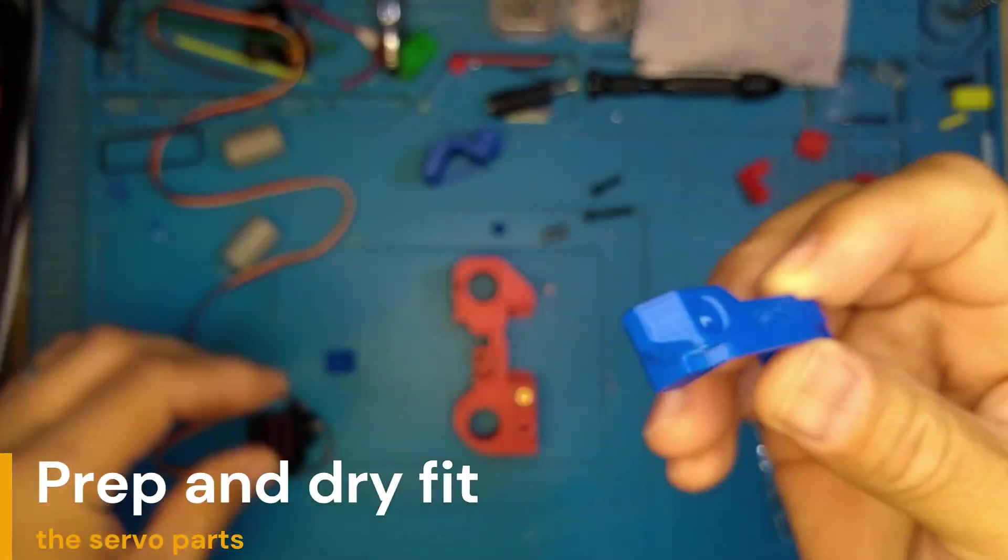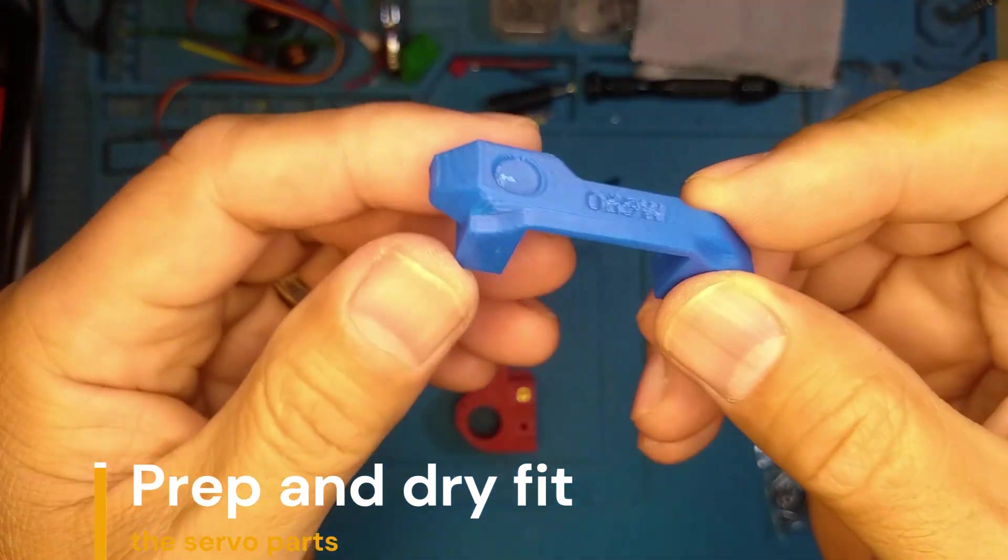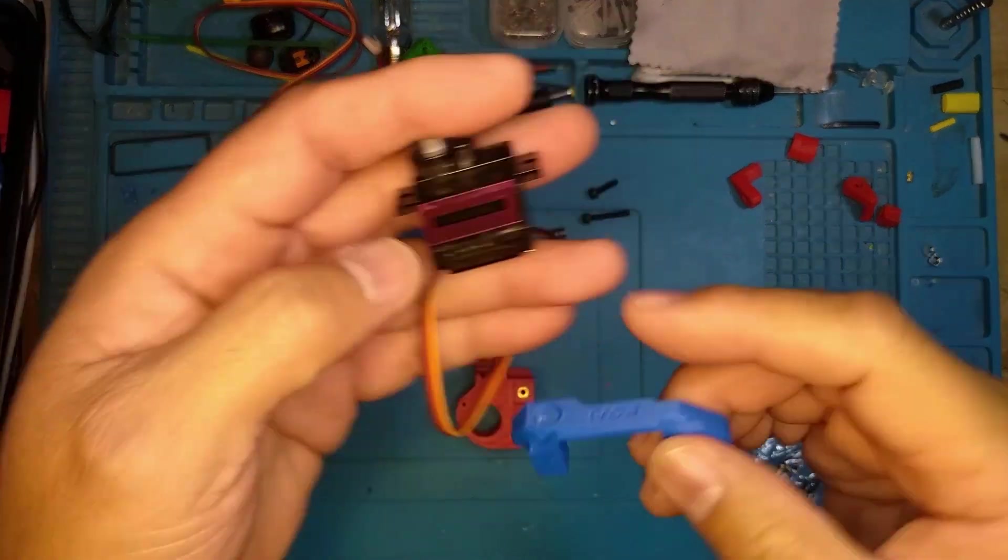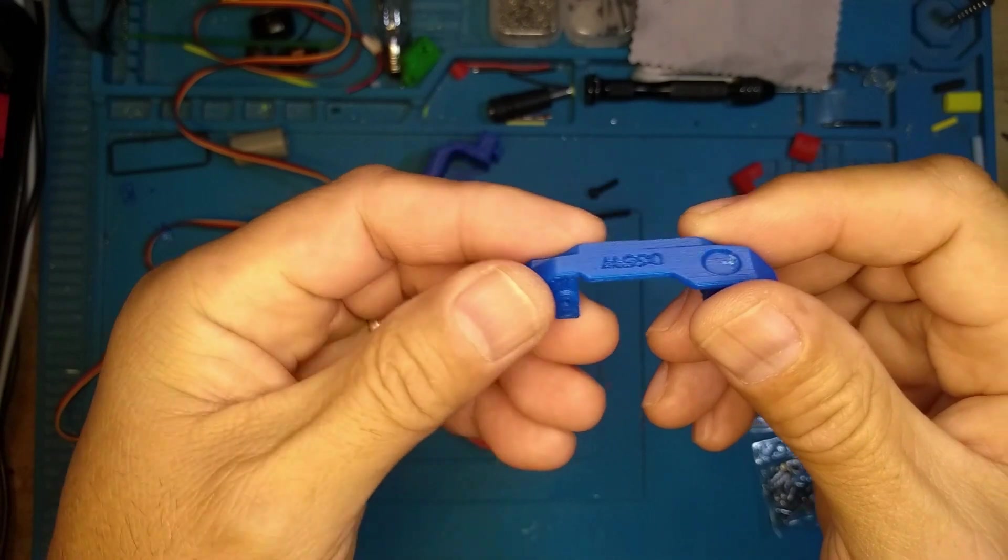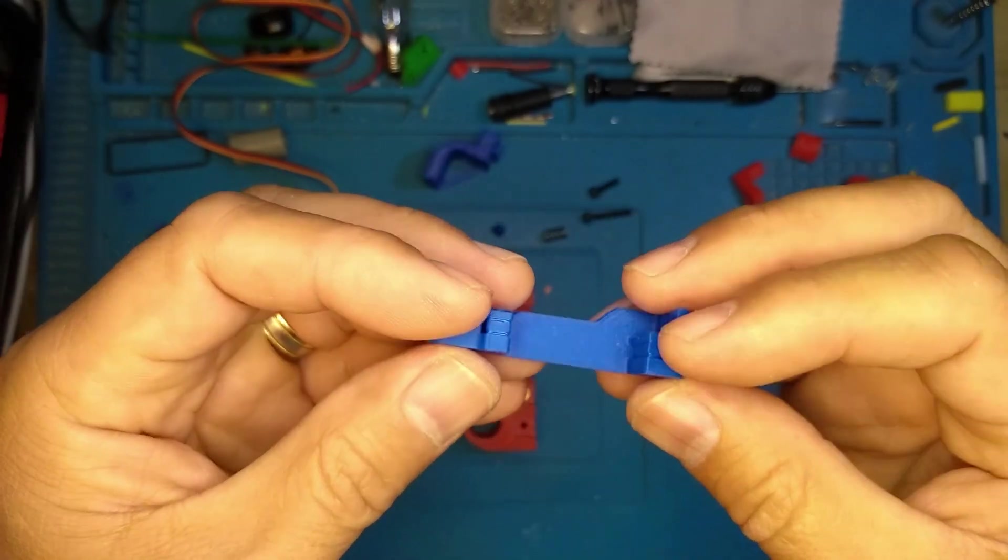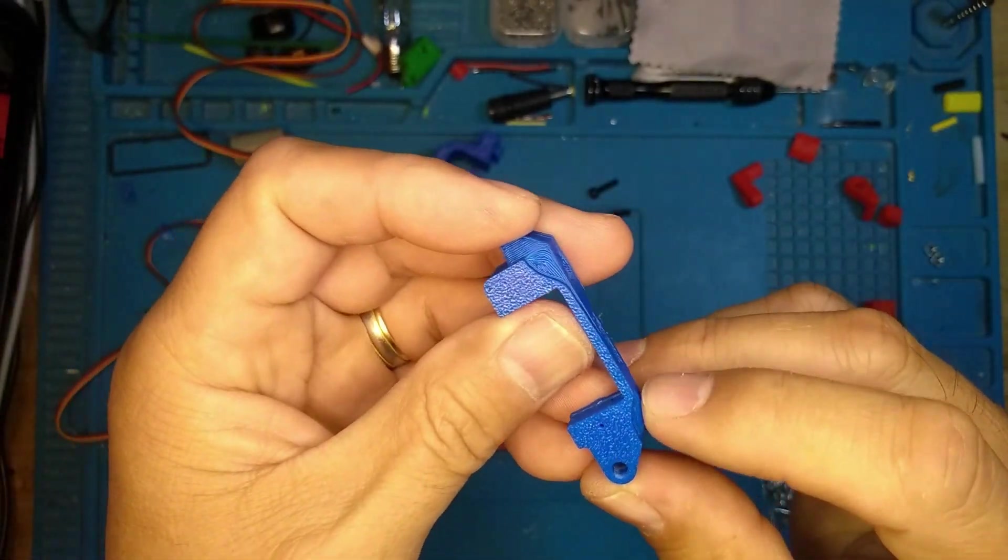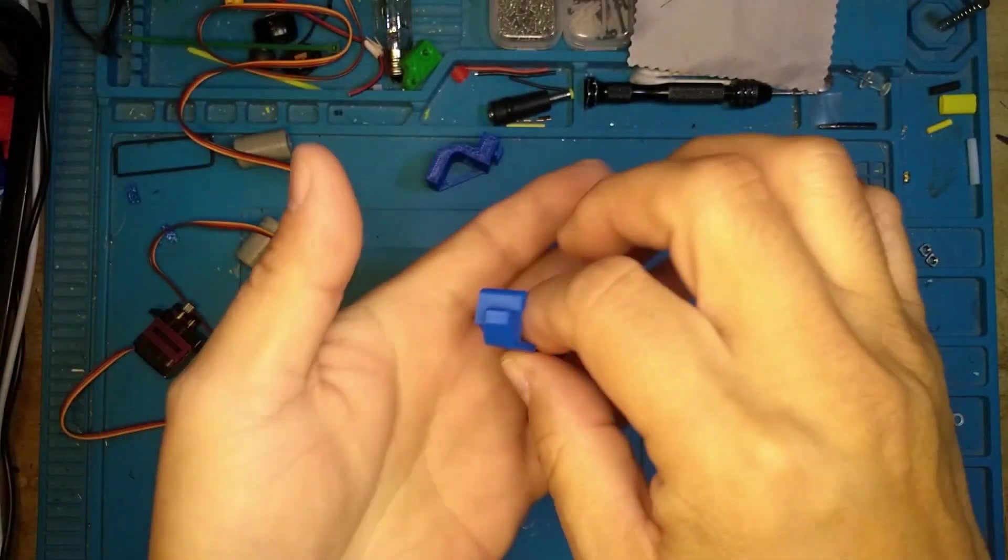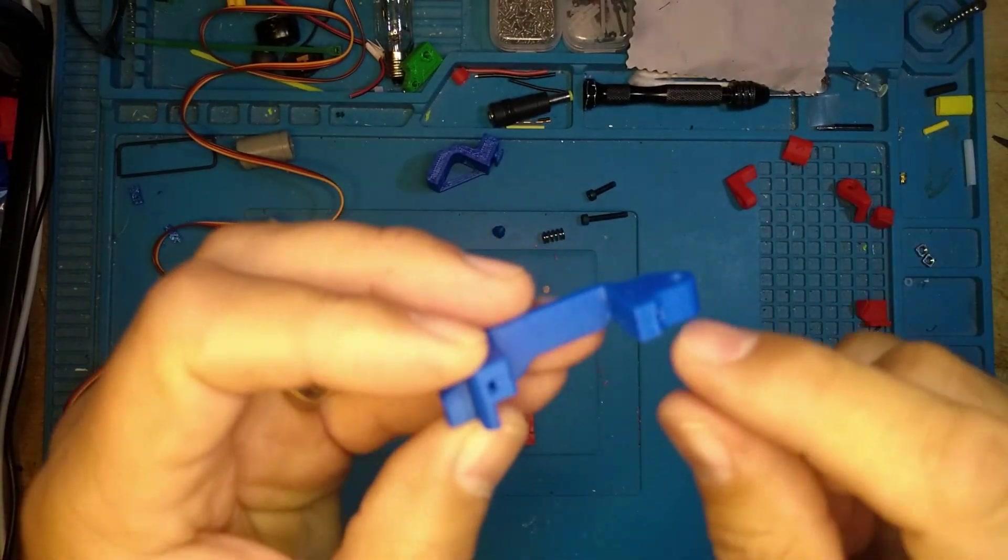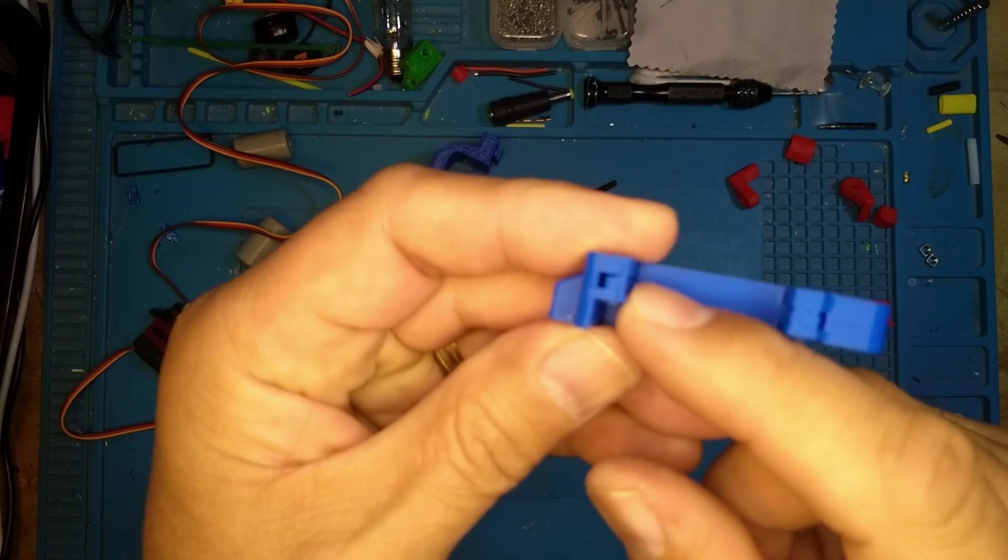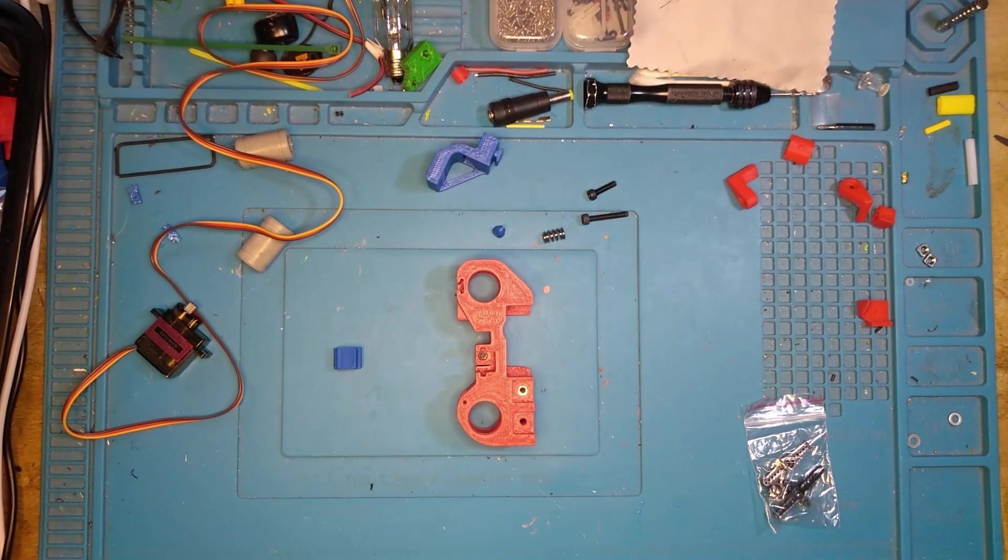The next step is to get your servo set up to be installed. So I'm using an MG90S servo, that's what my kit came with. This part says MG90S on it. You get a choice between this and the other part. I've already printed this out. There are four supports: these two already fell off just by lifting it off the belt plate, but there were two here, and there are two more right here and one right there. So you're going to want to remove those somehow.